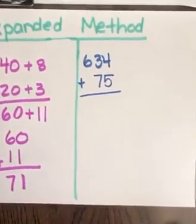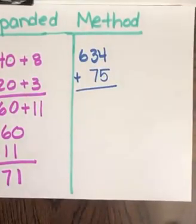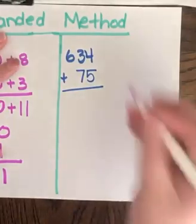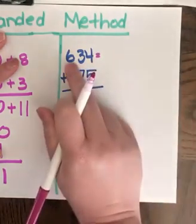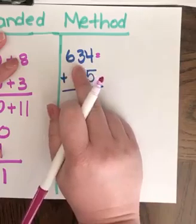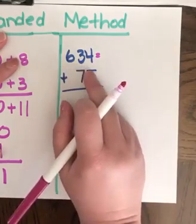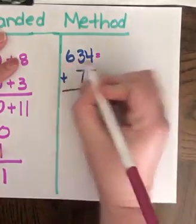Alright, over on our next equation we have a three digit on top. So just like we did before, we're going to show the value of each place. So when we say the number 634, if you say it slowly, you hear the numbers when you say it. So 634.